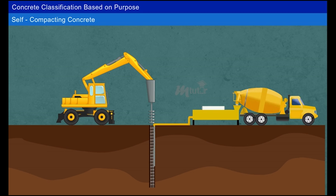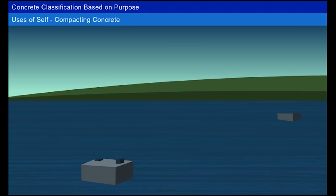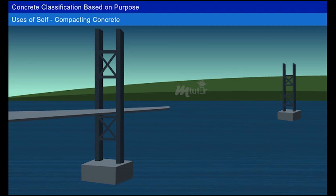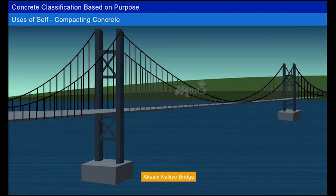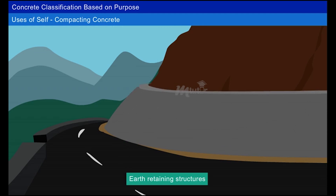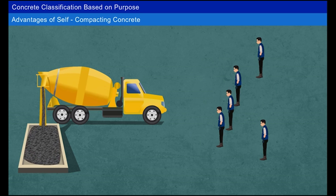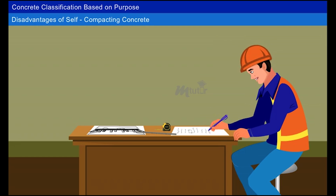During pile foundation work or due to congested reinforcements in structures, it is quite difficult to use a vibrator needle for compaction. To address such difficulties, self-compacting concrete is used — it flows and compacts under its own weight. It is mostly used for bridges; the Akashi Kaikyo Bridge is built with self-compacting concrete. It has also been used for the construction of the dome at the Central Station in Delhi and for retaining structures. Advantages: better finished surfaces requiring no plastering, and less workmanship needed. Disadvantages: skilled engineers are required for special mix designs and cost is high.